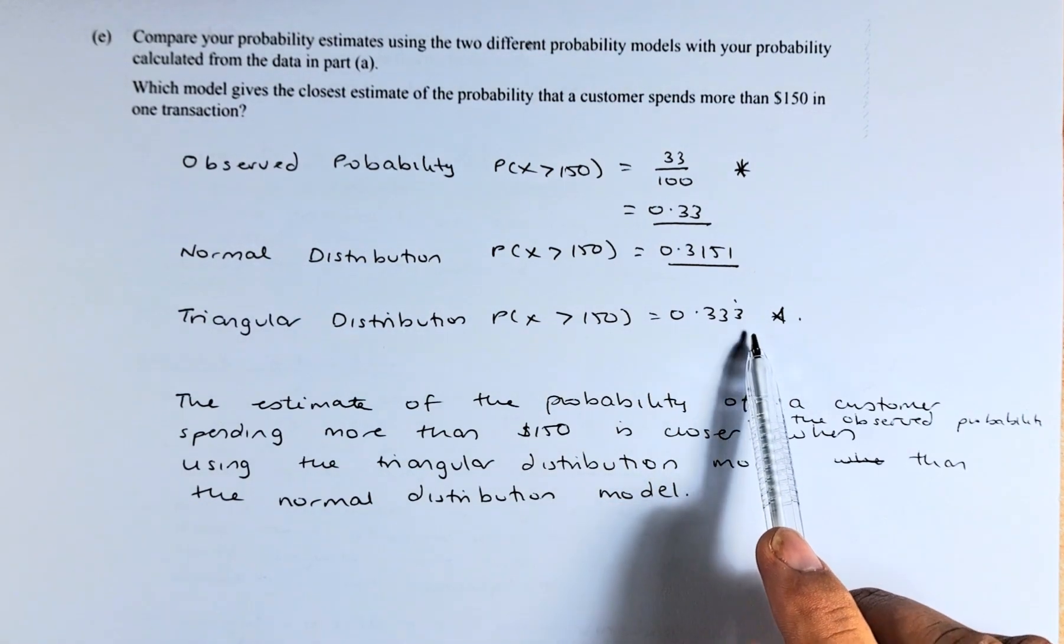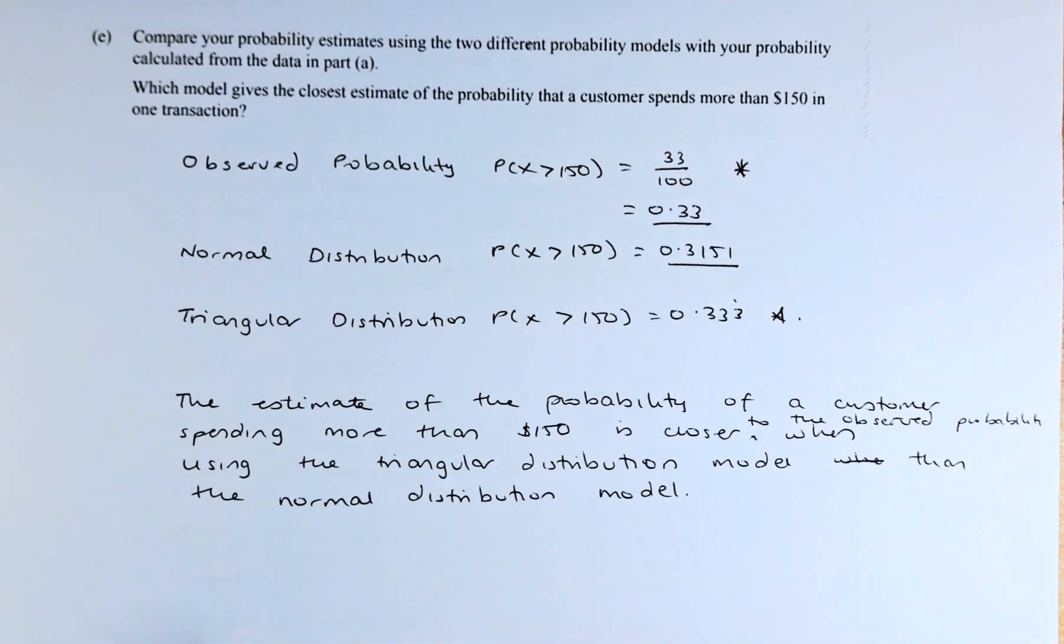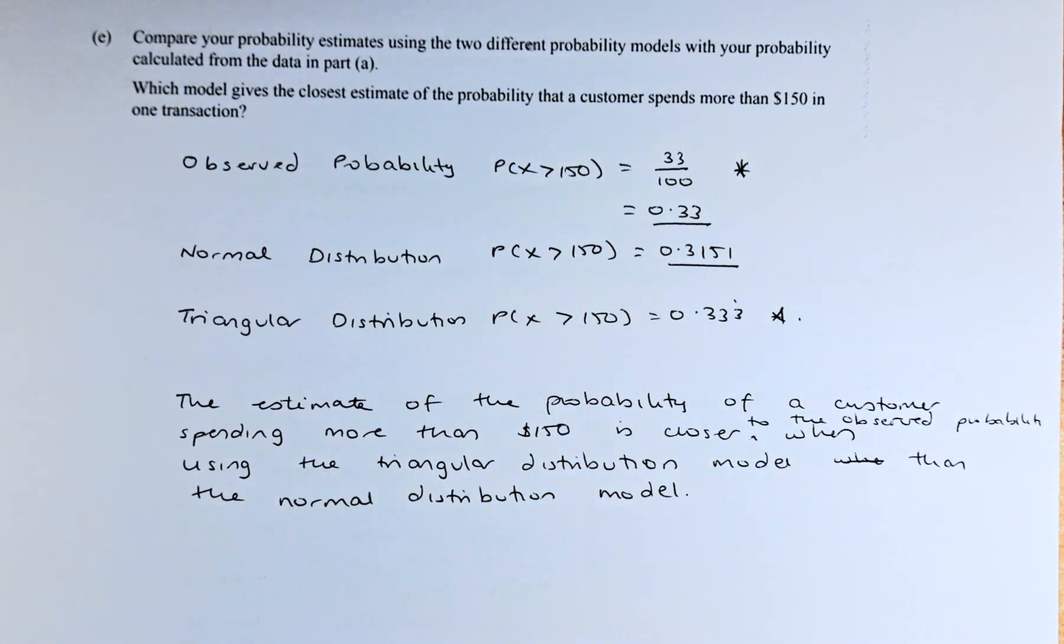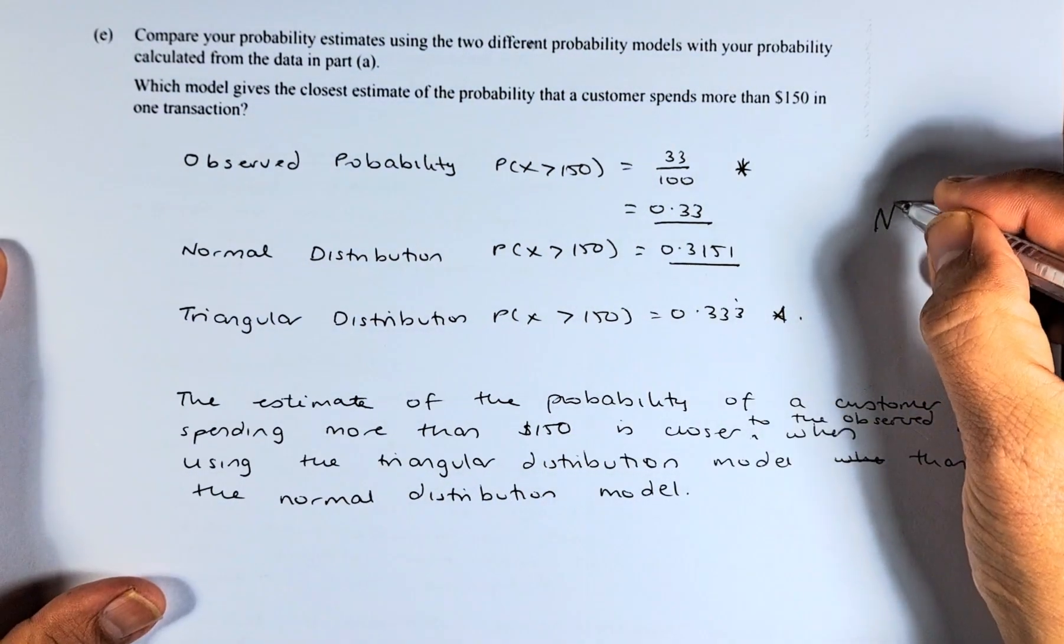It's 0.333, which is about the same as 33 over 100 compared to the normal distribution, which is 0.3151. And that is the merit in this question.